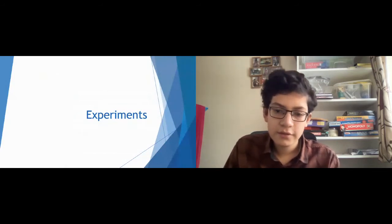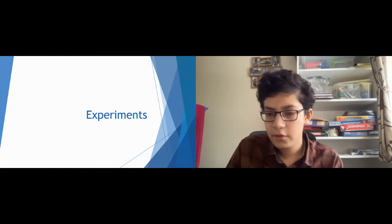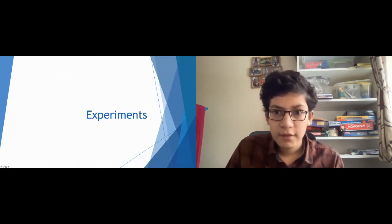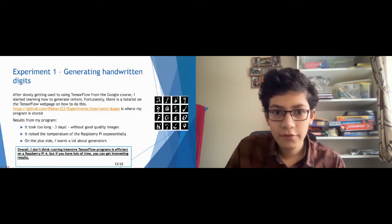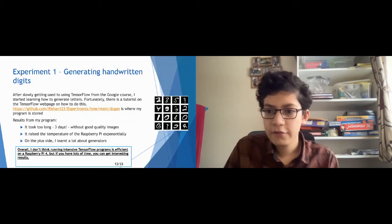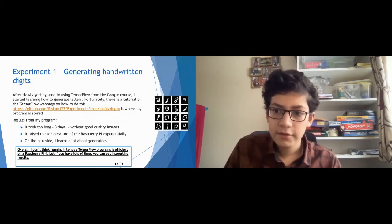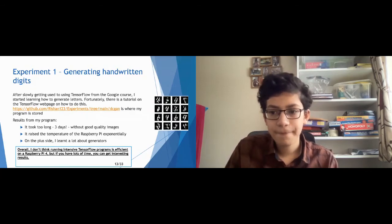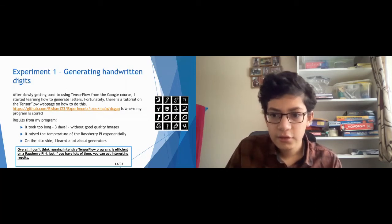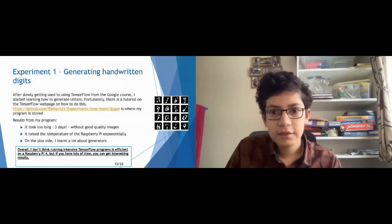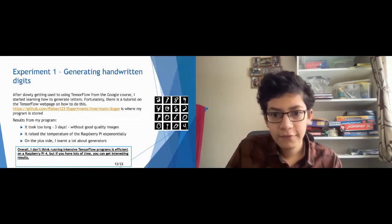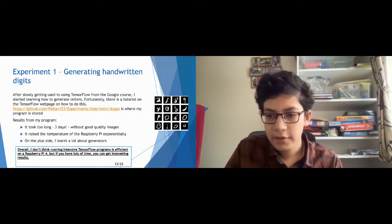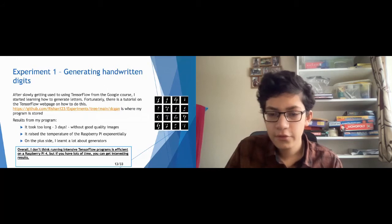So, in this slide, I'm going to talk about the experiments I followed from online tutorials. And they include generating handwritten digits, and also training a model to paint like an artist, or neural style transfer. When the Raspberry Pi 4 was released, and I was slowly getting used to using TensorFlow from the Google Developers course, I started learning how to generate letters from an online TensorFlow tutorial. And the results I got was that it took a ridiculous amount of time, and the output wasn't that great, and it wasn't readable. It raised the temperature of the Raspberry Pi exponentially, but I later fixed that with a fan. However, I still learnt a lot about generators, and that machine learning models don't always do what you want them to do.